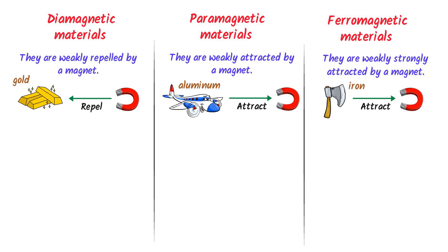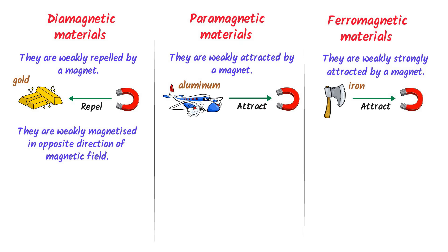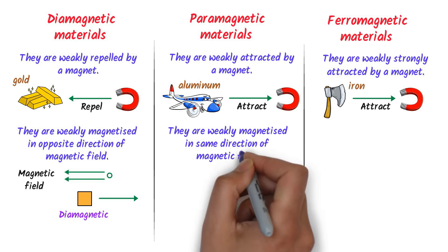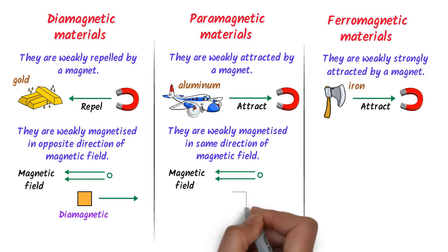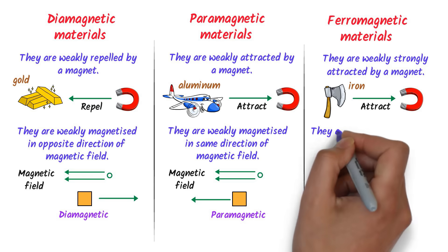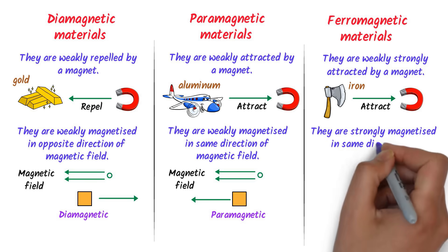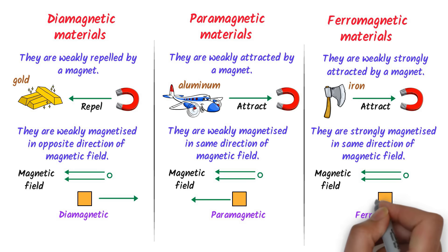Secondly, if we place diamagnetic materials in a magnetic field, they are weakly magnetized in the opposite direction of the magnetic field. For example, if the magnetic field is in this direction, diamagnetic materials are magnetized in the opposite direction. While paramagnetic materials are weakly magnetized in the same direction as the magnetic field. While ferromagnetic materials are also strongly magnetized in the same direction of the magnetic field.